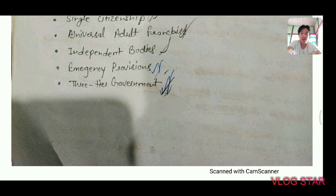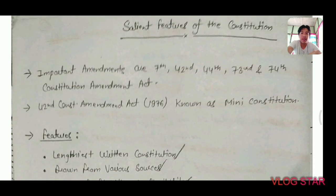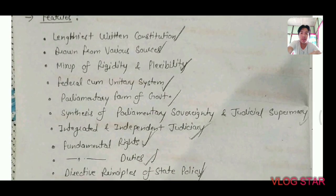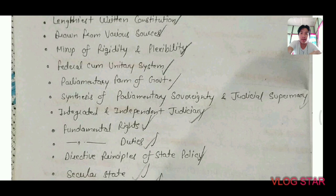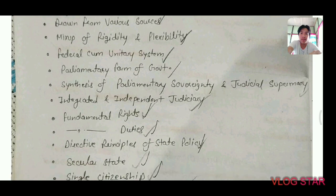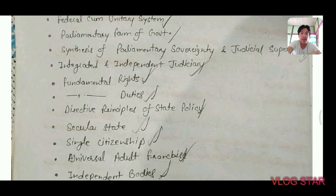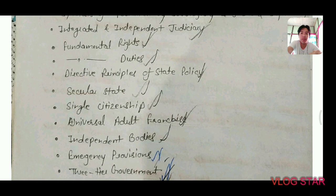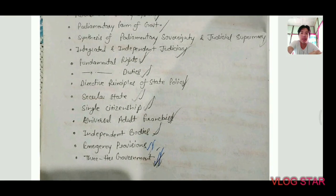The three-tiered government was added by the 73rd and 74th Constitutional Amendments. These are the salient features of the Constitution that you should remember — by heart. These features are asked in exams as well as in mains, so you should know each point and be able to write a little about each.